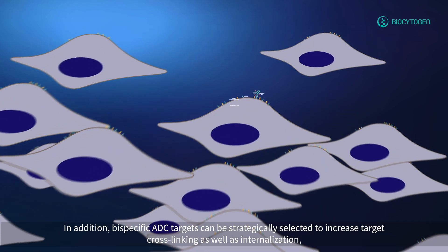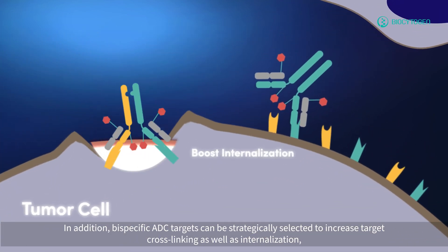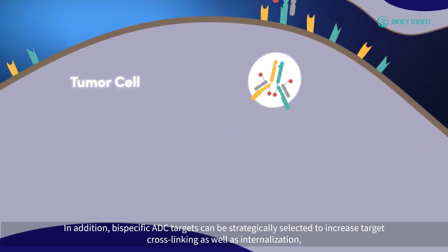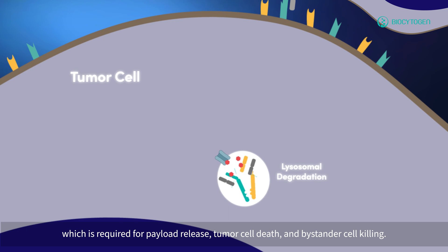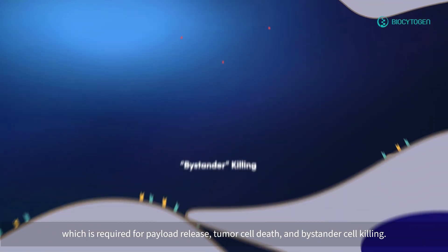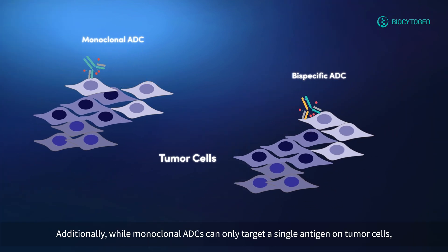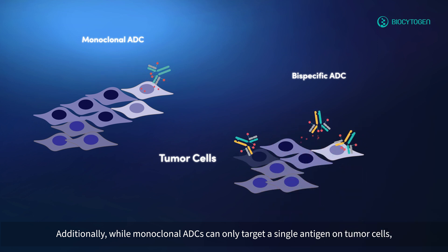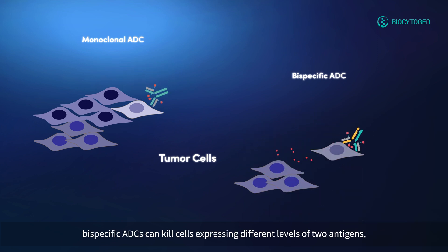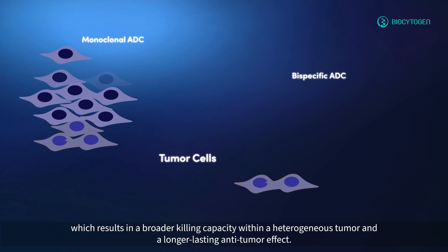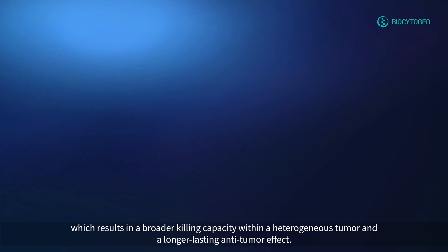In addition, bispecific ADC targets can be strategically selected to increase target cross-linking as well as internalization, which is required for payload release, tumor cell death, and bystander cell killing. Additionally, while monoclonal ADCs can only target a single antigen on tumor cells, bispecific ADCs can kill cells expressing different levels of two antigens, which results in a broader killing capacity within a heterogeneous tumor and a longer-lasting antitumor effect.